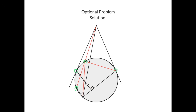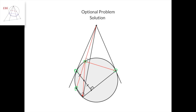Now, consider the quadrilateral defined by the four points marked in green. It is a harmonic quadrilateral because it is cyclic, and because if we take the tangent lines at this point and this point, they intersect here, and this point lies on this diagonal of the quadrilateral. Now that we know this is a harmonic quadrilateral, we can project it onto this line with respect to this point. This point would go here, this point would go here, and this point would stay at its place.